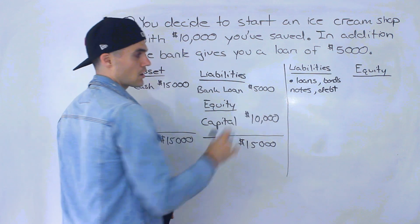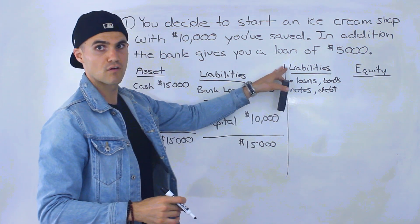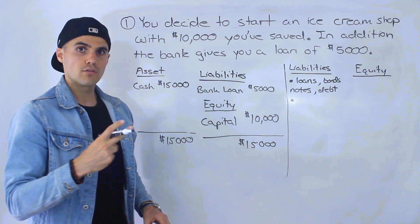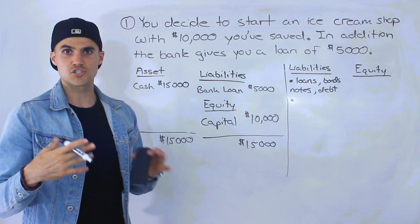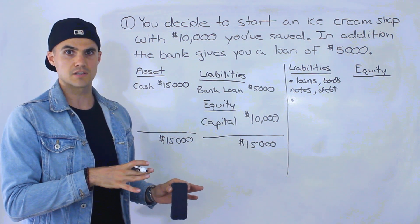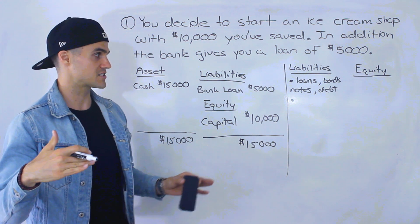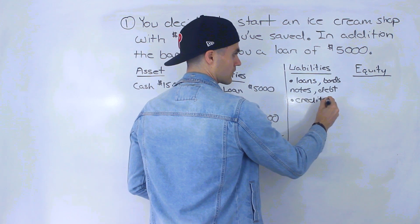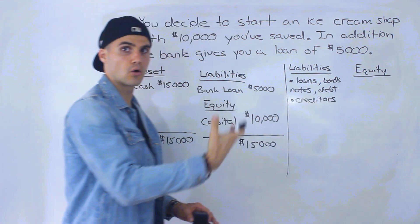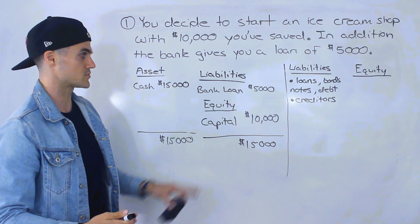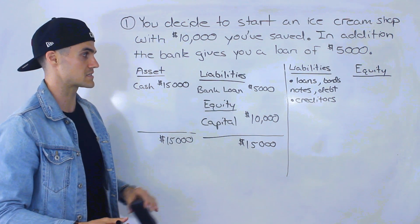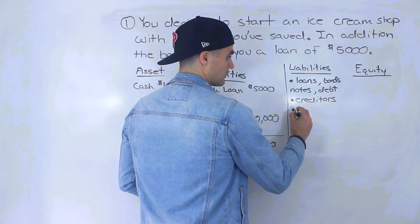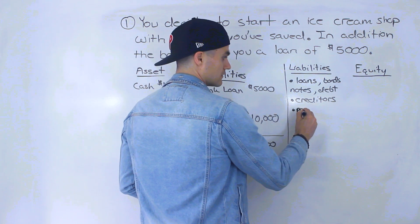All of these are types of liabilities. And if you remember, the two biggest types of external users of financial statements are creditors and investors. Creditors go under this category — people who are giving you loans for a business are called creditors. So the bank would be a creditor for this business. And with loans, what you have to do is pay interest.